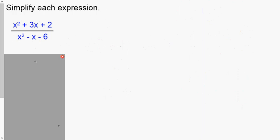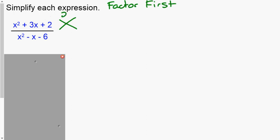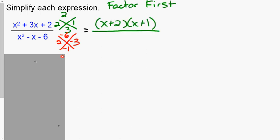Moving on — when we start dealing with trinomials, this is where factoring comes back. We need to factor first. Once we've factored down to binomials, then we can cancel out matching binomials. You can do your diamond on top, or some people like to put the diamond beside the problem. On top we get (x + 2)(x + 1); on the bottom we get (x + 2)(x − 3). The order doesn't matter.